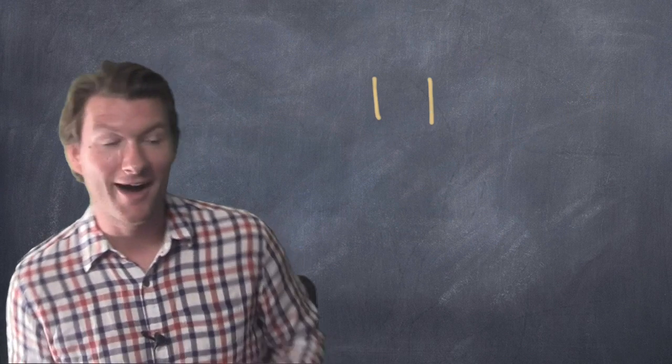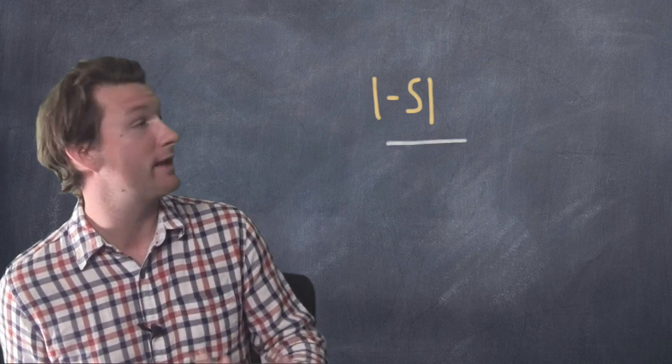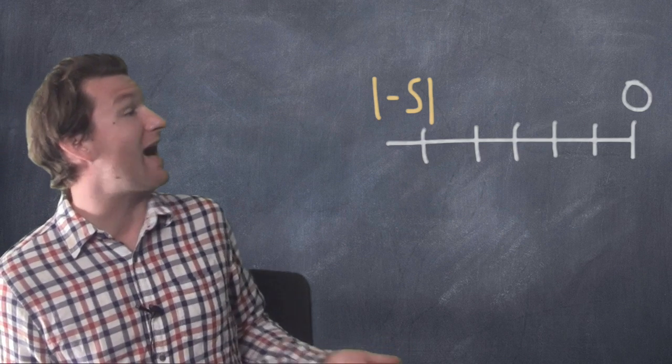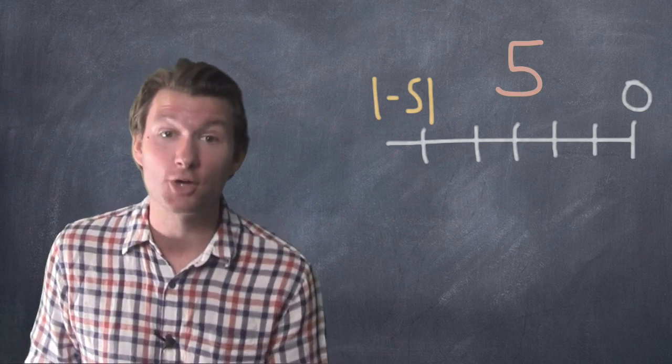What about negative five? The absolute value of negative five? Well, negative five, we put it on a number line, how far away is it from zero? Negative five is five away from zero, so the absolute value of negative five is five. That's how this works.